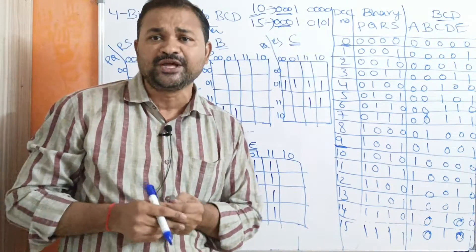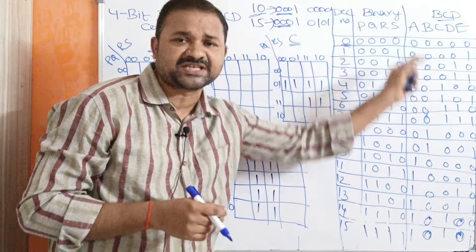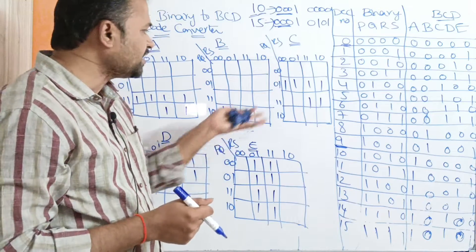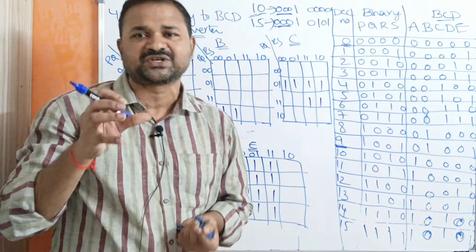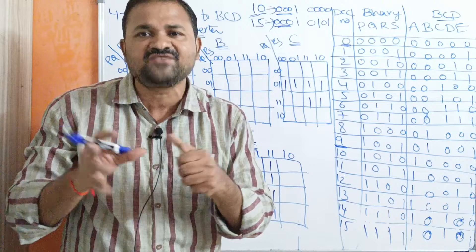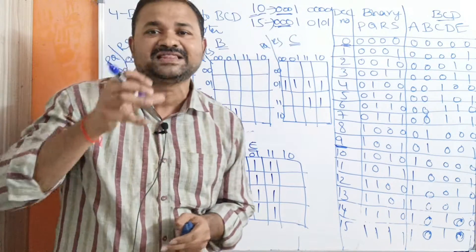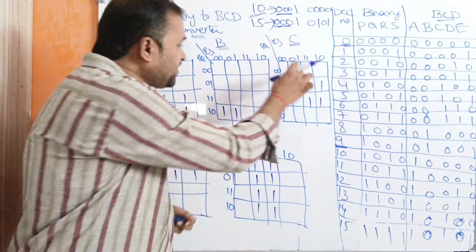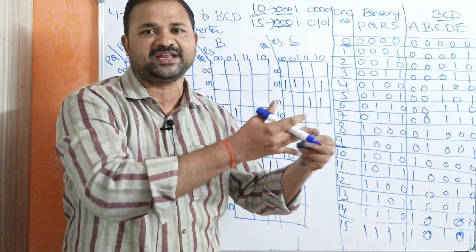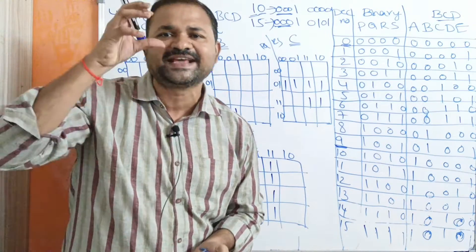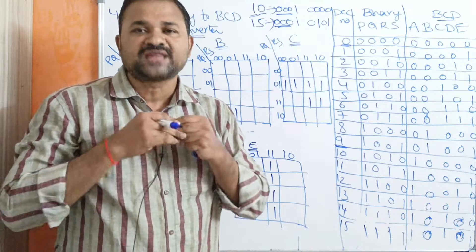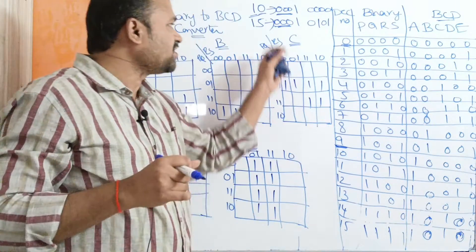The first 3 bits are 0s only. Even if we have 0s in the Karnaugh map for XYZ, if we take 3 more variables, while simplification there is no need for all those 0s — because we have to cover 1s only. That's why it is better to neglect the first 3 zeros.